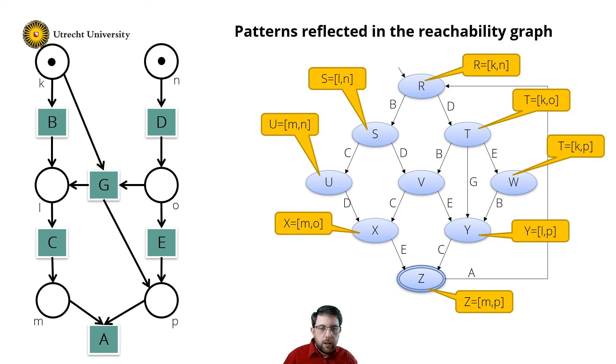And it produces in state R. So it has to produce a token in places K and N. Like this.